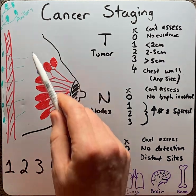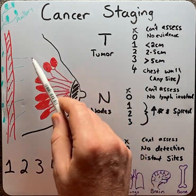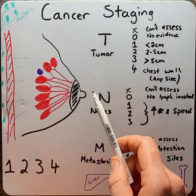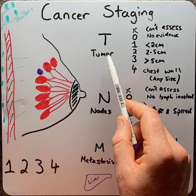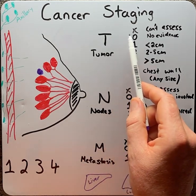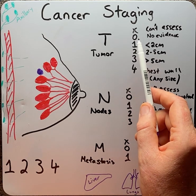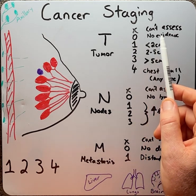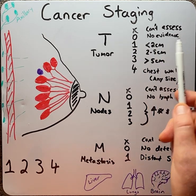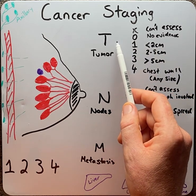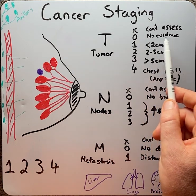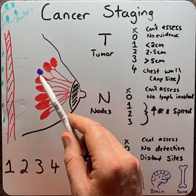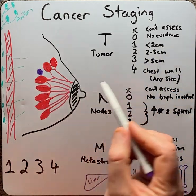Using breast cancer as an example, starting with the T staging system. TX means the doctor was unable to assess for the tumour. A T0 means there's no evidence for a tumour in the breast.